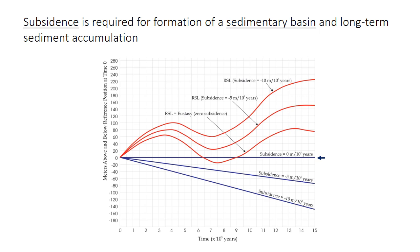In this graph, the blue lines show subsidence rates. The horizontal line with the arrow indicates no subsidence — the level of the Earth's surface remains constant. The other two lines indicate 5 meters and 10 meters of subsidence occurring every 100,000 years. The red lines are base level curves, which you can also think of as relative sea level. They are a combination of cyclical eustatic sea level and the subsidence that's occurring. Where there's no subsidence, you just get cycles of base level oscillating up and down. In the higher two curves, base level still oscillates but shows a general increase over time due to the cyclical sea level plus consistent subsidence.